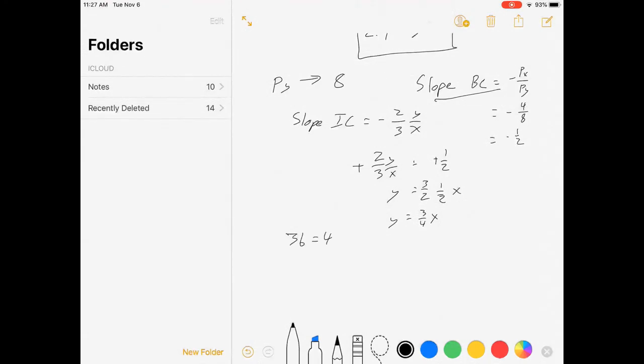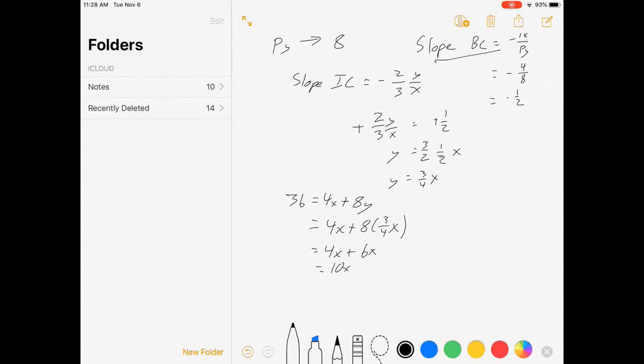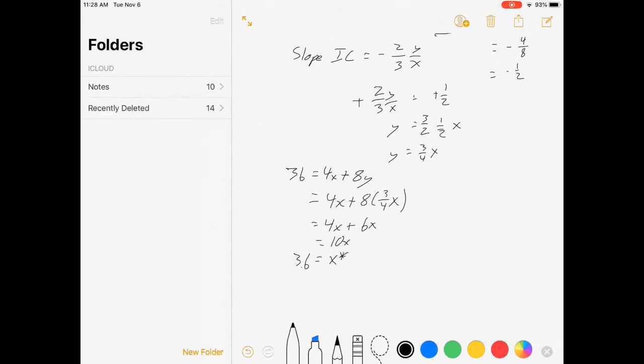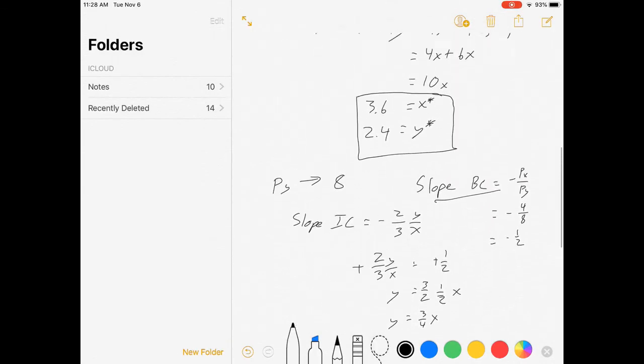36 is equal to 4x plus 8y. Remember we changed the price of y. Which is 4x plus 8 times 3 fourths of x. Which is 4x plus 6x which is 10x. So once again x is equal to 3.6 But now our y function, y is 3 fourths of that and 3 fourths of 3.6 is 2.7. And 2.7 is greater than our last y star which is 2.4.